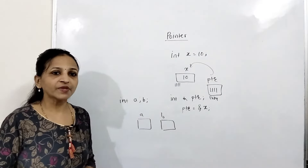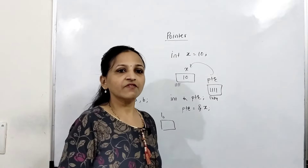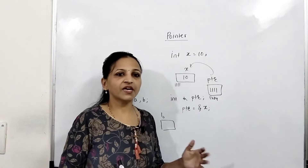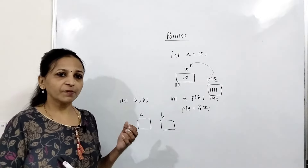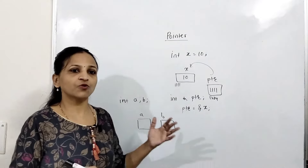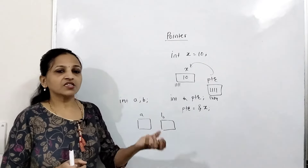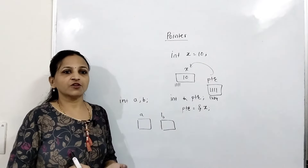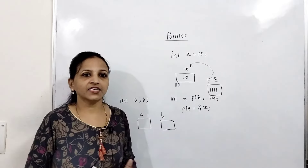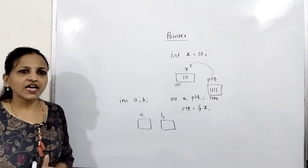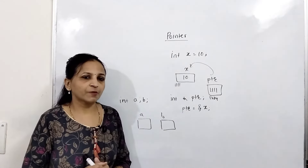An identifier is a name given to any variable, any function, any array, or any structure you have created. Whatever name you are giving, it is called an identifier. That is only for identification purposes.